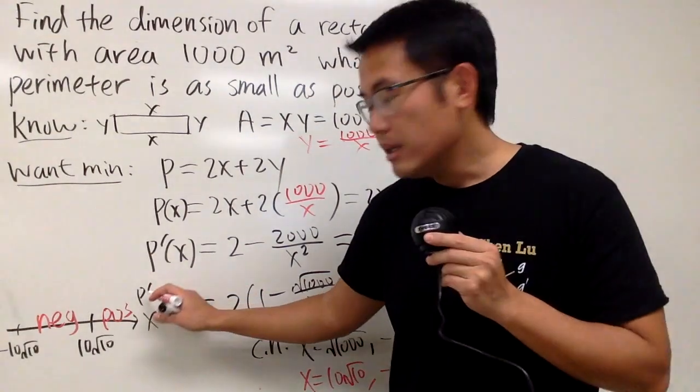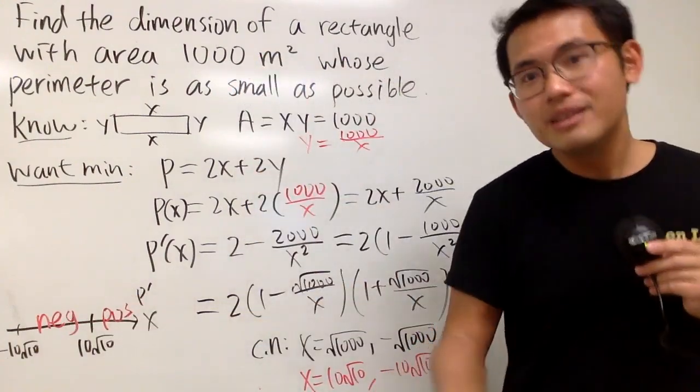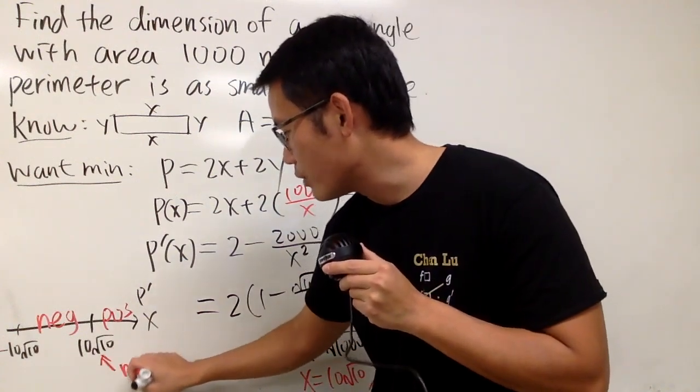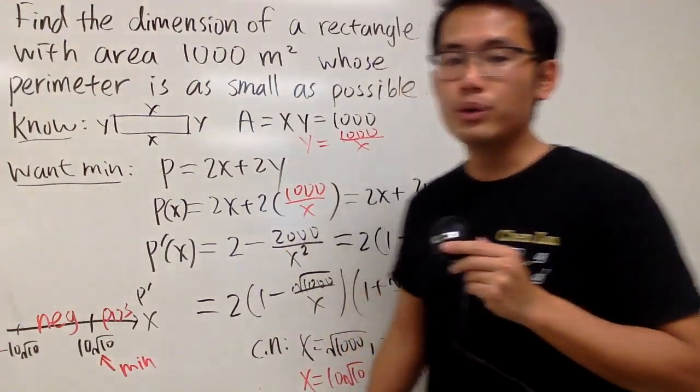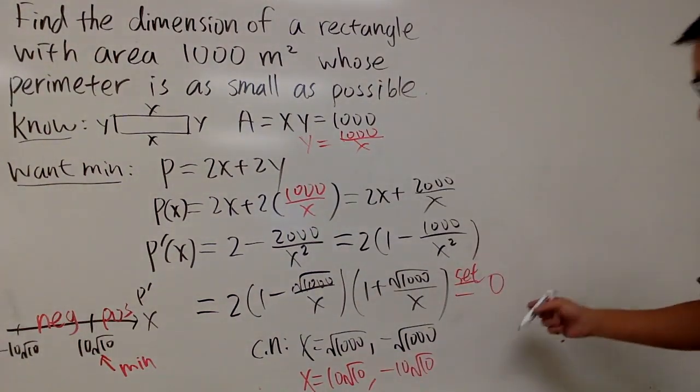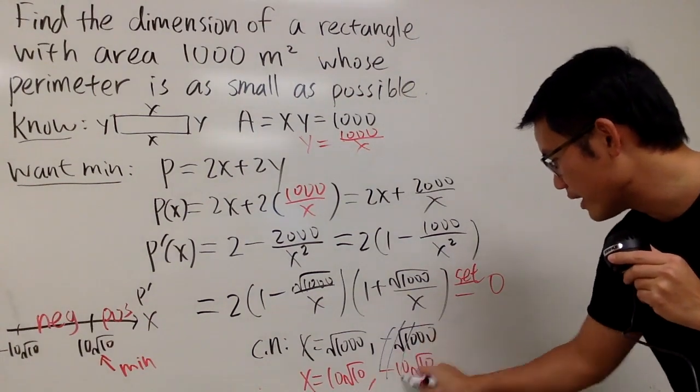Anyway, as we can see, P prime goes from negative to positive. That means the function goes decreasing to increasing, which says we will have a minimum when x is equal to 10 square root of 10. And when we have that, of course, we can come back here. We will know that y, by the way, again, we don't need to look for the negative numbers.